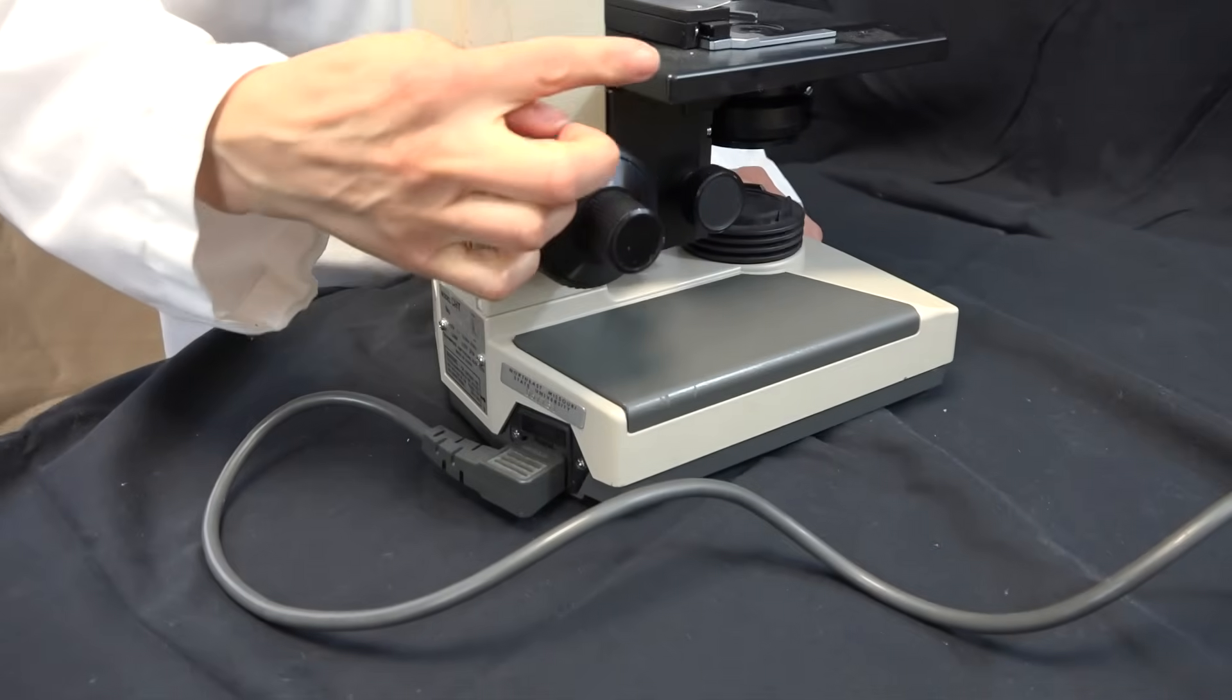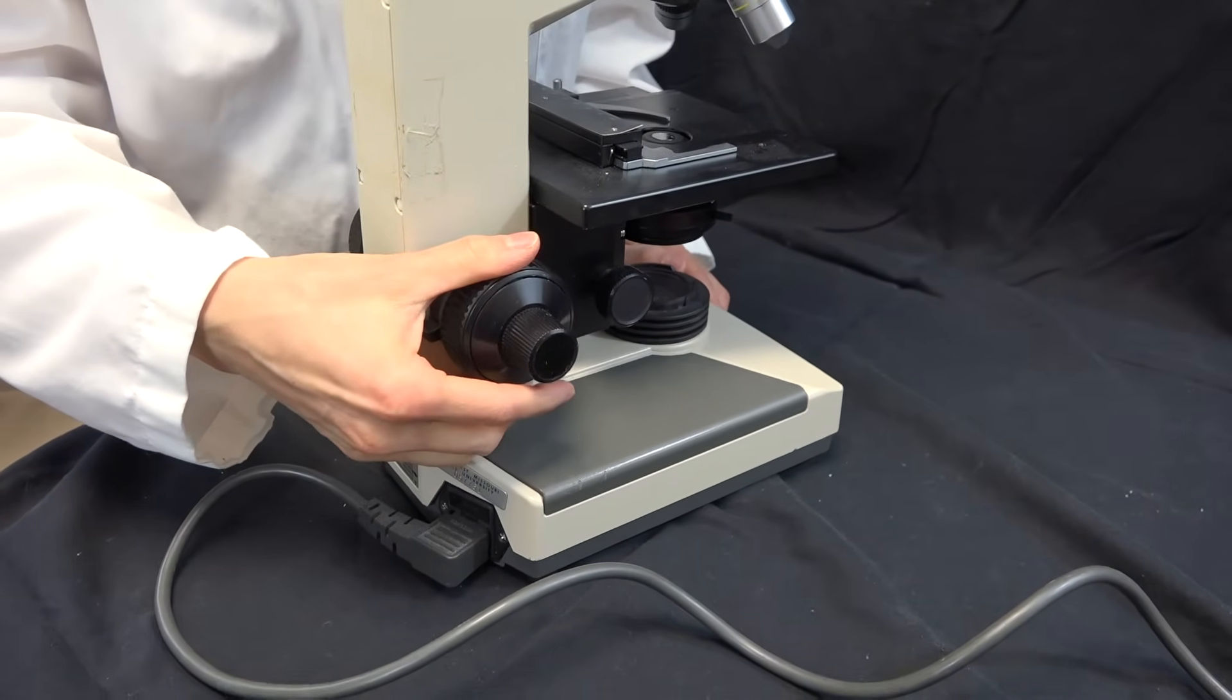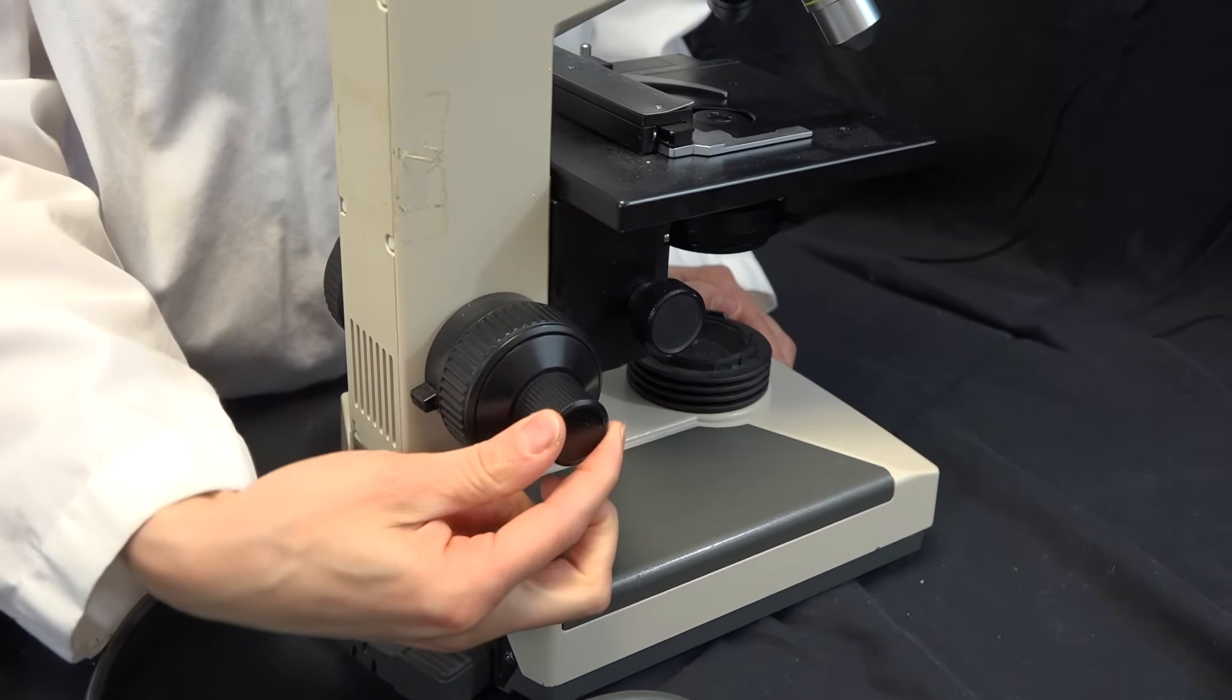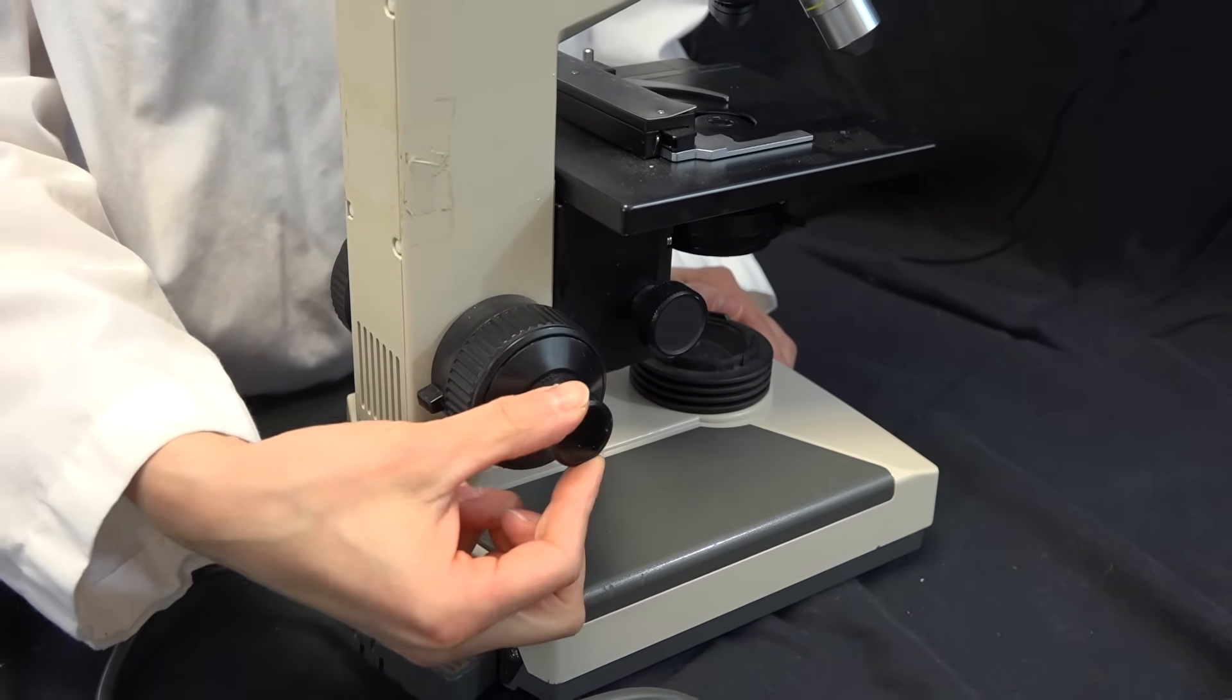These dials move the stage up and down to help focus your specimen. The coarse adjustment moves the stage quickly. The fine adjustment moves the stage in much smaller increments.